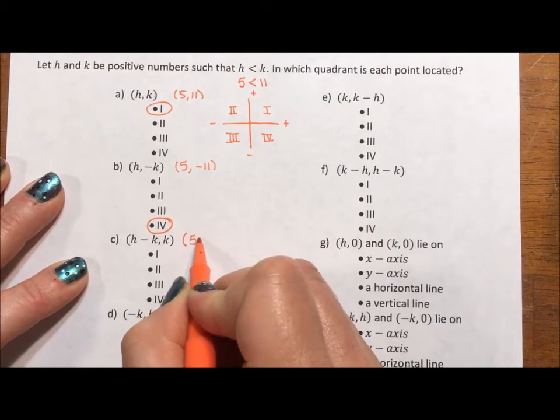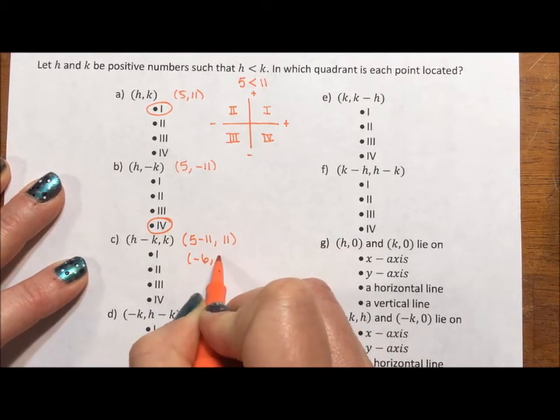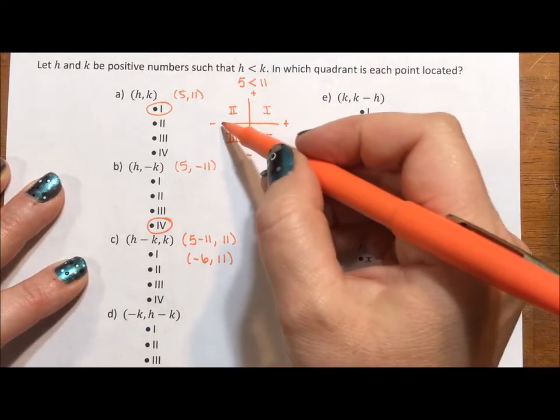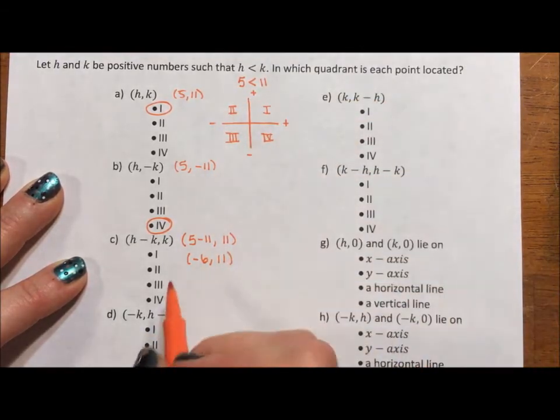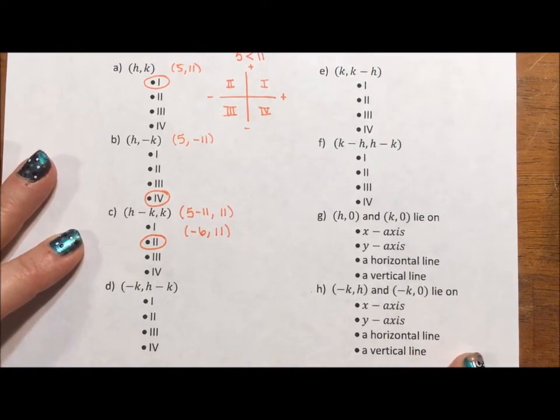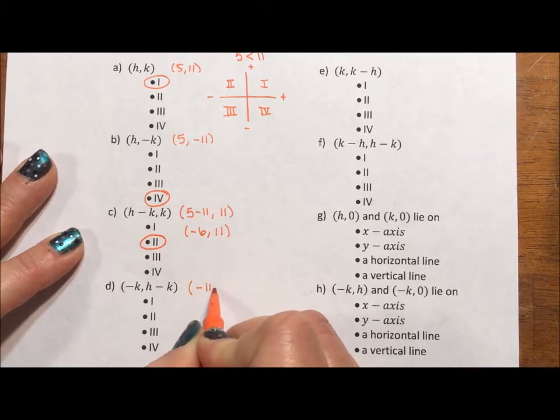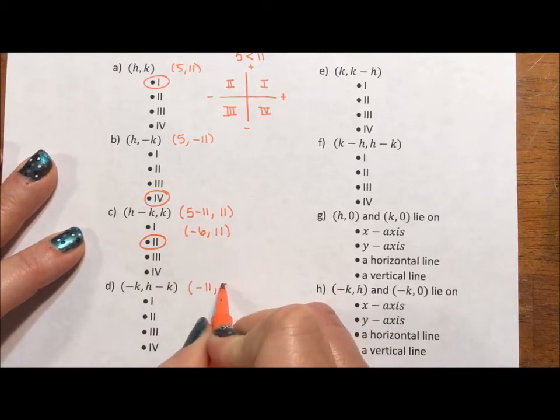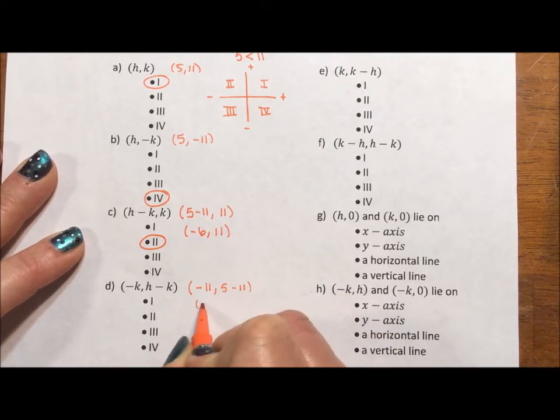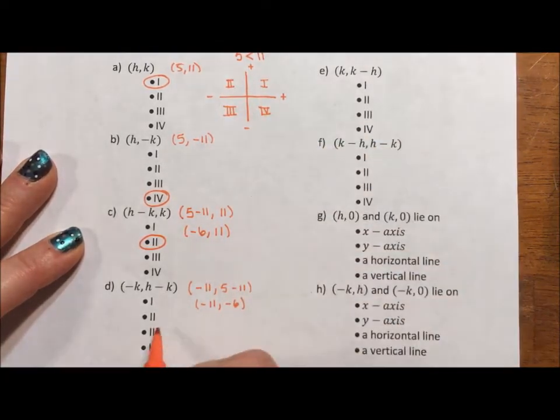h minus k, that's going to be 5 minus 11, comma 11. So this is going to be negative 6, 11. So negative 6, negative x, positive y, that's going to be the second quadrant. Here we have negative k, that's negative 11. h minus k, we just did that, 5 minus 11. So we have negative 11, negative 6, negative, negative. We have our third quadrant.